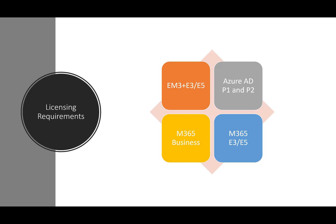M365 Business is one of the newer SKUs from Microsoft at $20 per user per month, and it has a lot of rich features from a security, identity, and productivity standpoint. The higher-level SKUs, M365 E3 and E5, are $32 and $64 MSRP respectively.